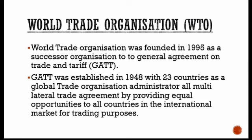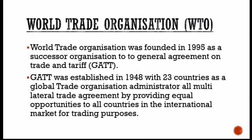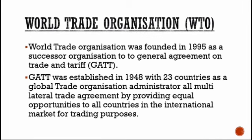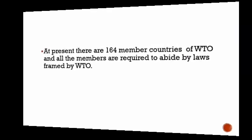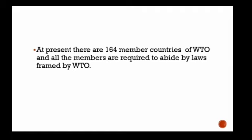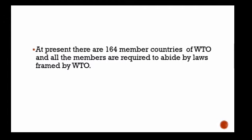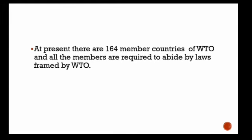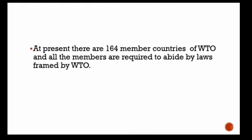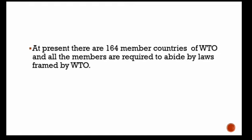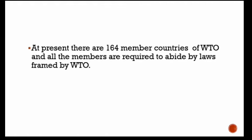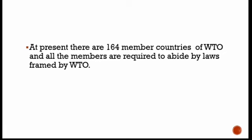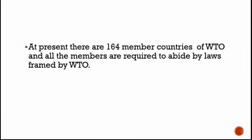Iska kaam ye tha ki ye poore global trade ko administer karti thi, saari multilateral trade agreements provide karke aur equal opportunities provide karke trading purposes ke liye. At present, number of member countries WTO ke hain 164, jo ki ek niyam se bandhe hue hain World Trade Organization ke saath. Simple words mein, WTO ya GATT ka kaam tha poore international trade ko control karna aur equal opportunities provide karna sabko trade ke liye.